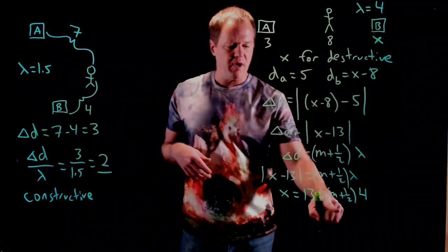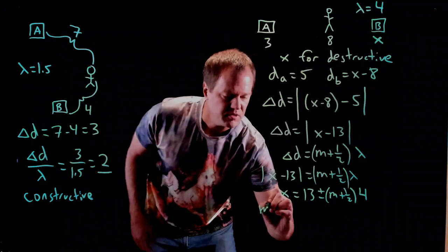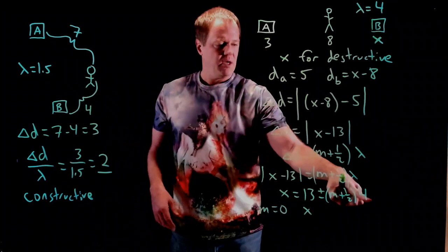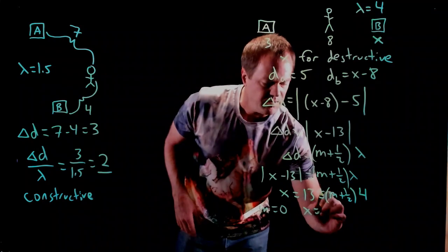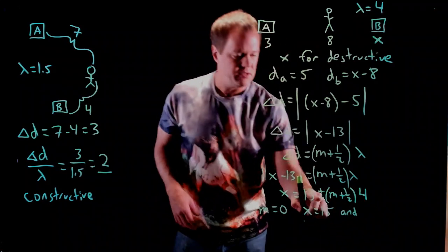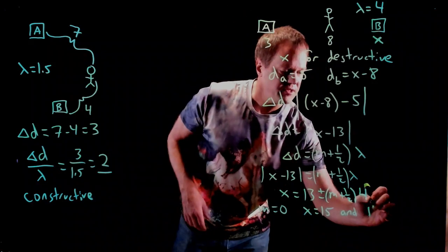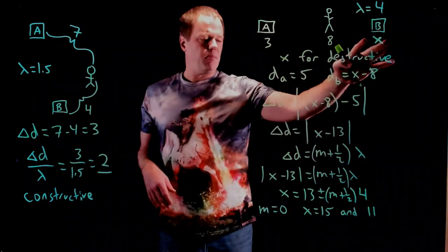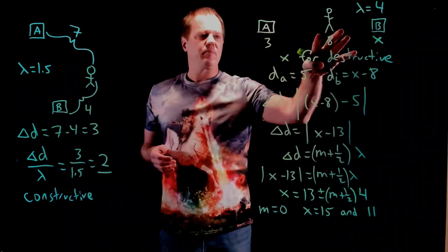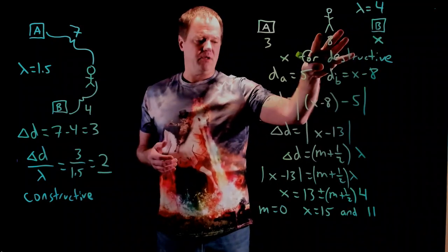I'm going to throw in m equals zero. For m equals zero, I get two answers. If I do the plus, I get 15. And if I do the minus, I get 11. So, the physical interpretation is, if we put speaker B at a location of 11 or 15, we're going to get destructive interference at this particular location.